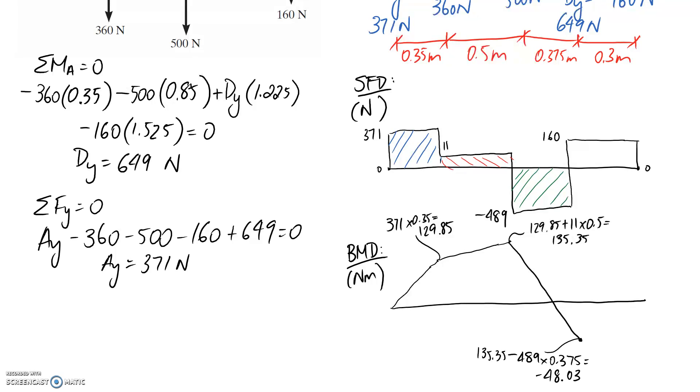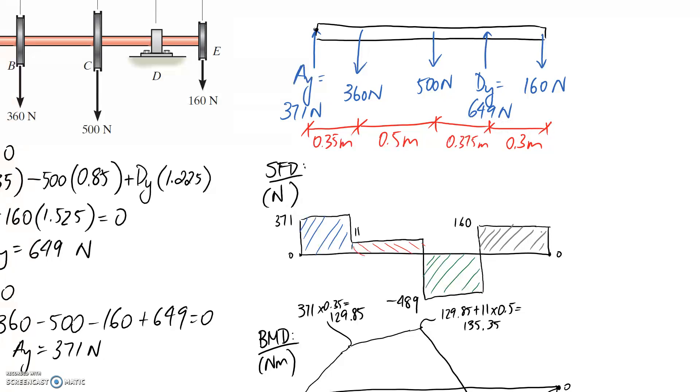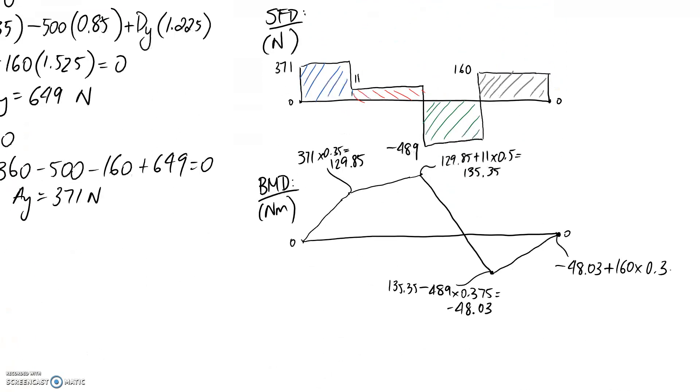Now we just need to add on our final little section, and we're adding because it's now again on the positive side of our shear force diagram. We would expect this to go back up to zero since we always have to start and end these diagrams at zero, but we can prove that that actually is the case. This point is going to be negative 48.03, and we need to add on the 160 multiplied by the distance over which it acts, which is 0.3 meters, and in fact this should indeed come out to be zero.